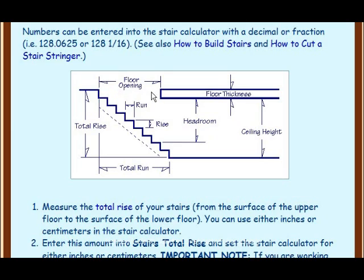Floor opening is the length of upper floor required to be removed so the headroom is correct. Floor thickness is from the surface of the upper floor to the surface of the ceiling below the floor.